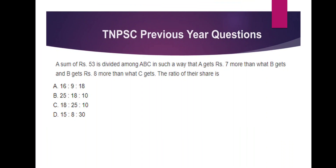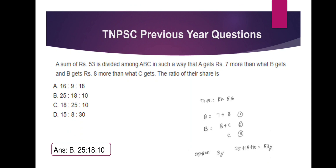53 is divided among A, B, C such that A gets 7 more than B, and B gets 8 more than C. So if C is 10 rupees, B is 18 rupees, and A is 25 rupees — 10 + 8 + 7 = 25. The total is 10 + 18 + 25 = 53. Option B is the answer.